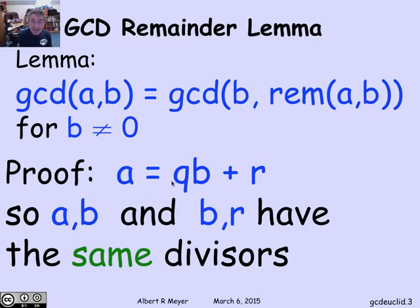If something divides both a and b, then it divides r. And if it divides b and r, it divides a. That means a and b and b and r have exactly the same divisors. They not only have the same greatest common divisor, all their divisors are the same. So obviously, the greatest one is the same. That proves this key remainder lemma.